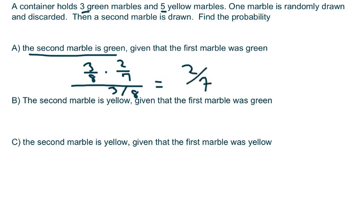Okay, the second marble is yellow. That's going to be the same thing: 3 out of 8 times 5 out of 7, given that the first marble is green. The green marble would be 3 out of 8. You divide that, so your answer is 5 over 7.